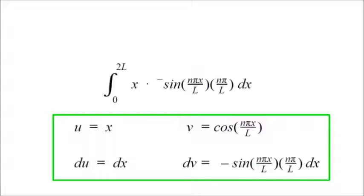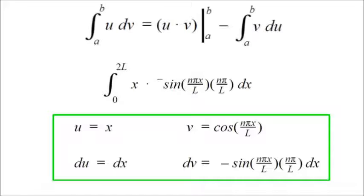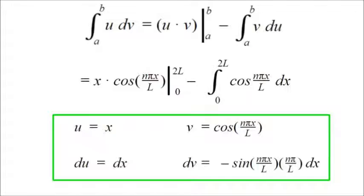Let us define v as cosine n pi x over L. And that means that du and dv, they are what they are. And if that doesn't seem like much help so far, it's because we're just getting started. You see what integration by parts does? It makes our difficult integral into something else, into u dot v evaluated from A to B,